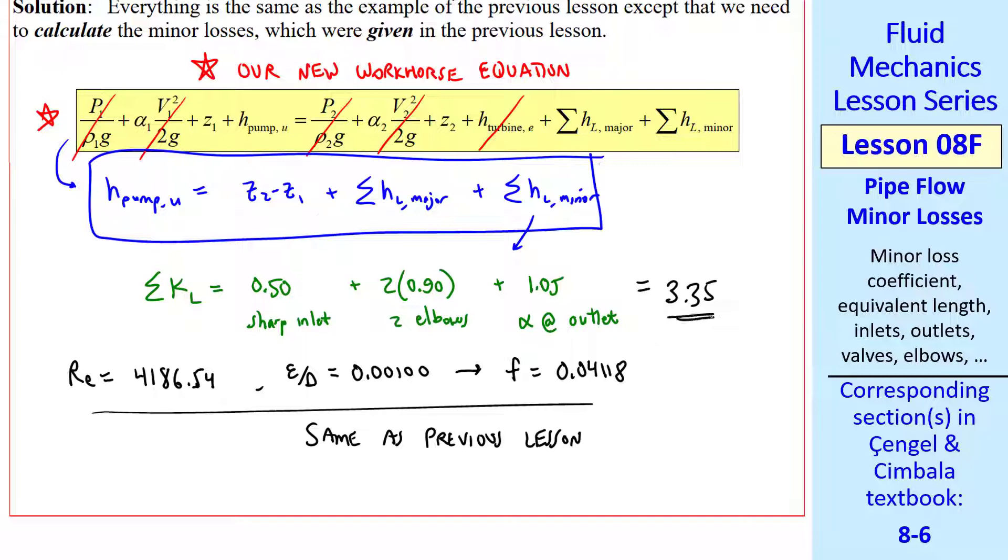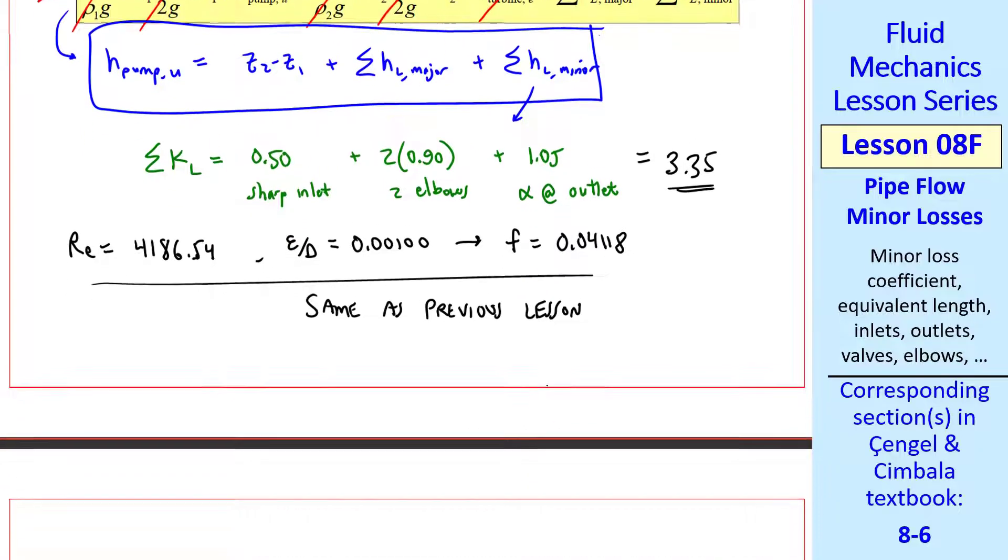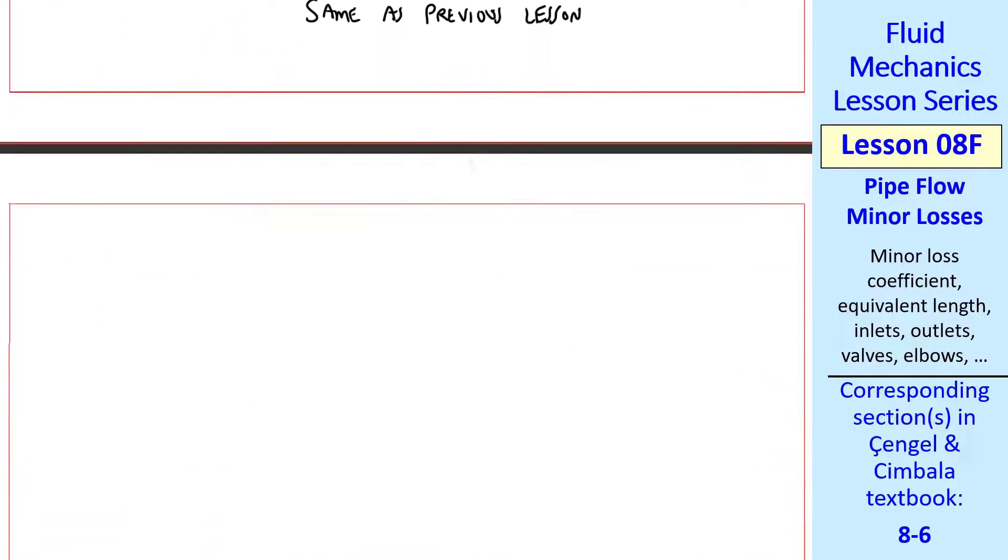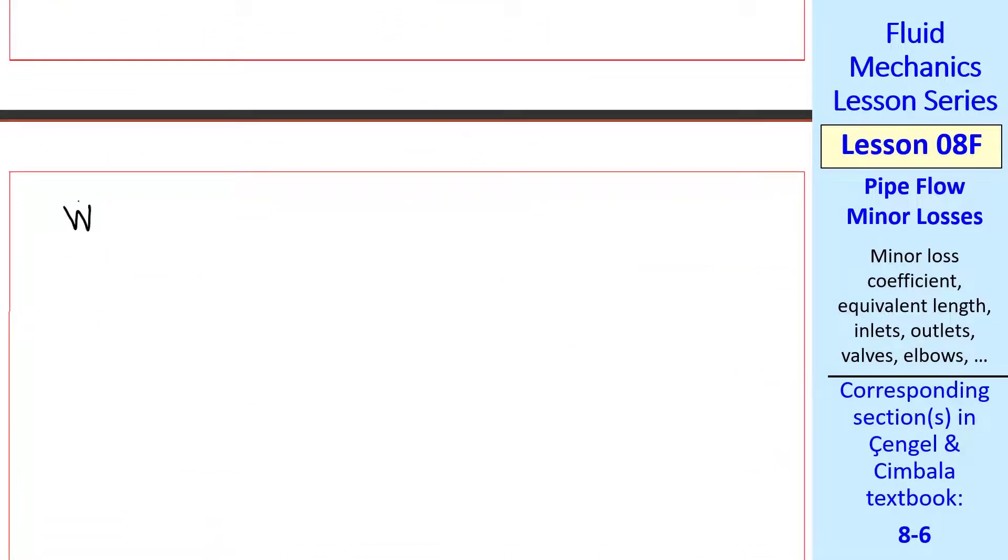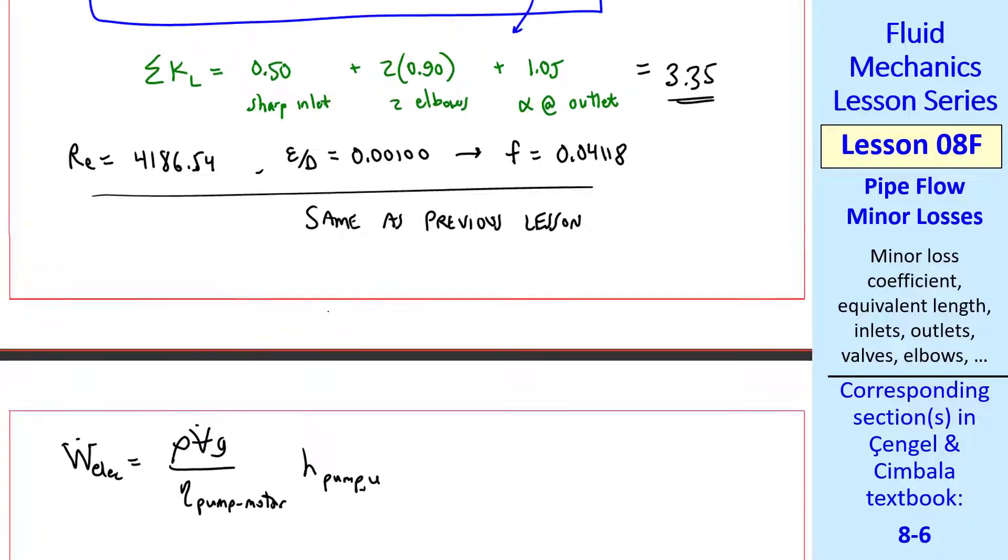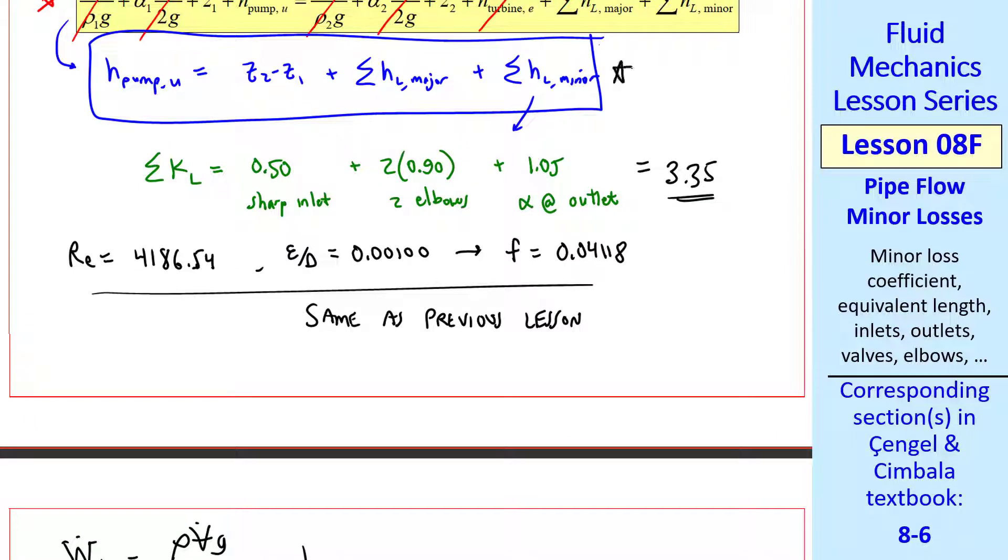To calculate W dot electric, we use the same equation as previously as well. Rho V dot G over eta pump motor, times H pump U. We plug in this equation for H pump U.